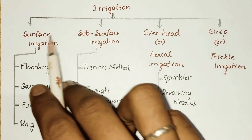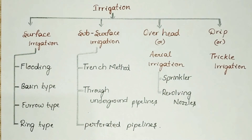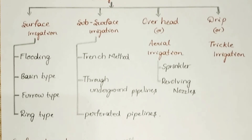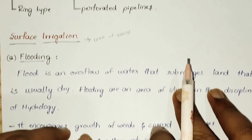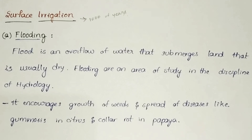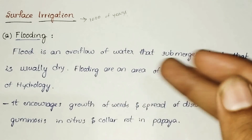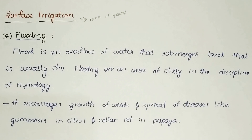Now we are going to study about surface irrigation and its subclasses. Surface irrigation is where water is applied and distributed over the soil surface by gravity, and is therefore known as surface irrigation. This method has been practiced in many areas, virtually unchanged for thousands of years.